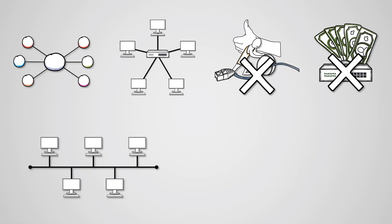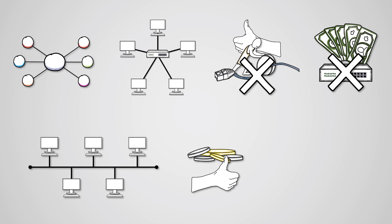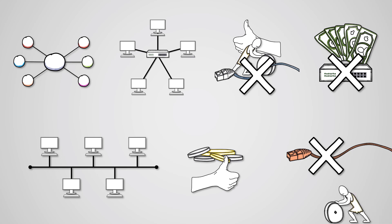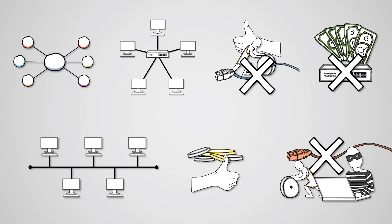A bus topology is when there is no central switch but every device is connected via a single central cable. Bus networks are low cost and easy to set up. However, if the backbone cable goes down the network goes down, only one device can transmit at a time which slows performance, and there are security issues.